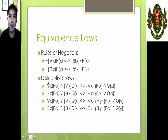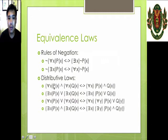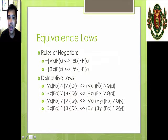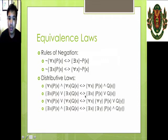How about distributive laws? If you want to move out quantifiers from predicates that are in conjunction or in disjunction, we observe these rules. If there are two predicates with the same variables and they have a universal quantifier, then we can move out the universal quantifier and have the two predicates in conjunction. Similarly, for a disjunction of two existentially quantified predicates, we can move out the existential quantifier and join the two predicates with an OR.